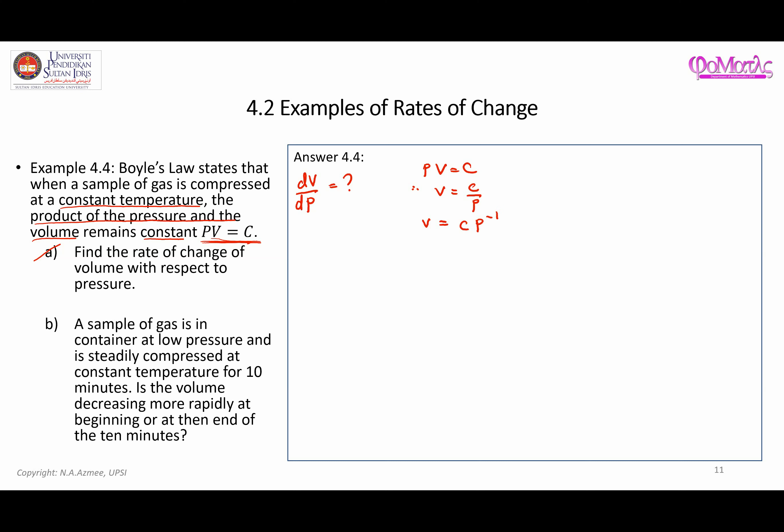The reason I'm doing this is because later on it will be easier to differentiate this equation with respect to P. So now dV/dP will be: C is a constant, so you're just going to put it aside. So C times—if you differentiate P^(-1)—that will be -1.